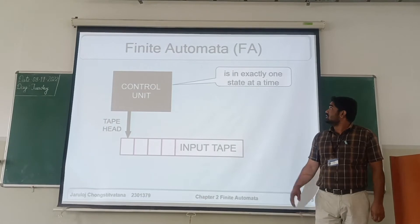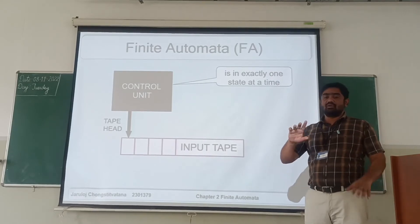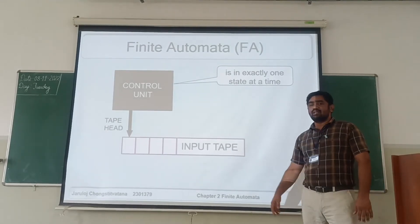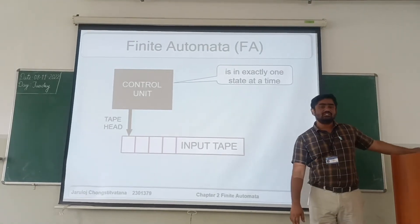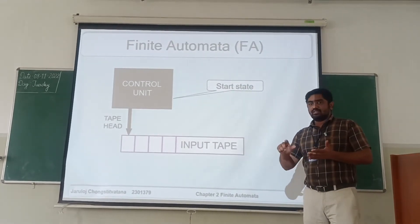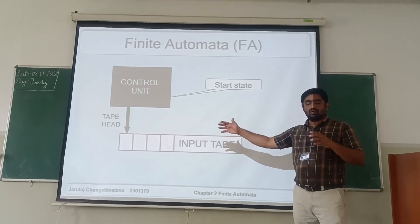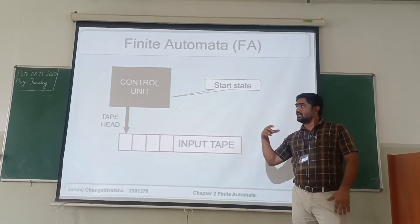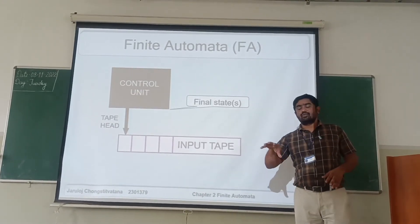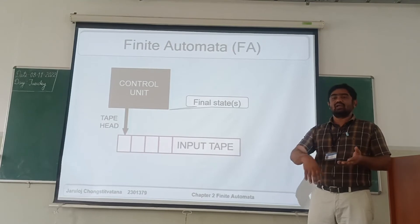The automata will work at exactly one state at a time. It will not work from multiple states; it works at individual states at a time — exactly one state at a time for each input. While working, you will have an initial state that represents the starting state. The initial state will receive the input, and it will start processing and finally move to the final states.